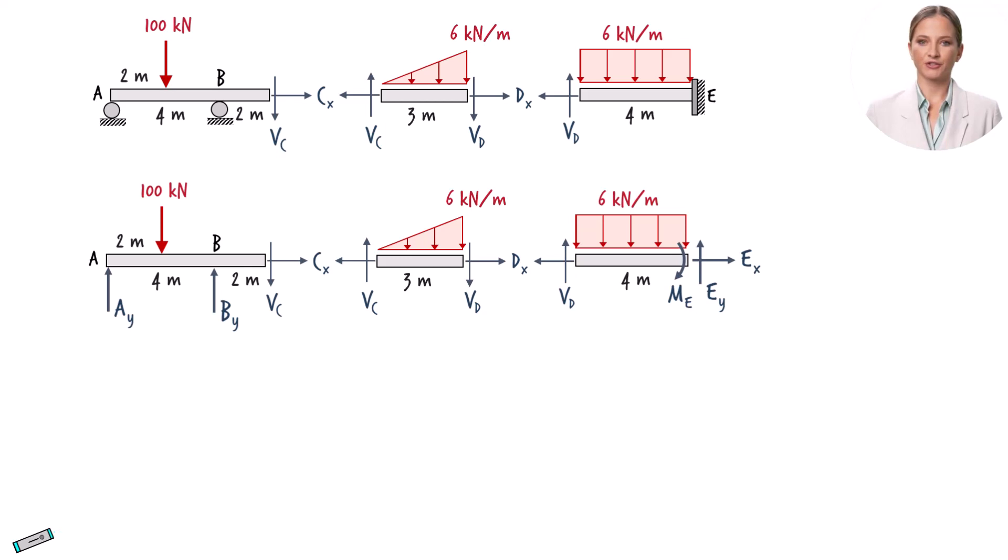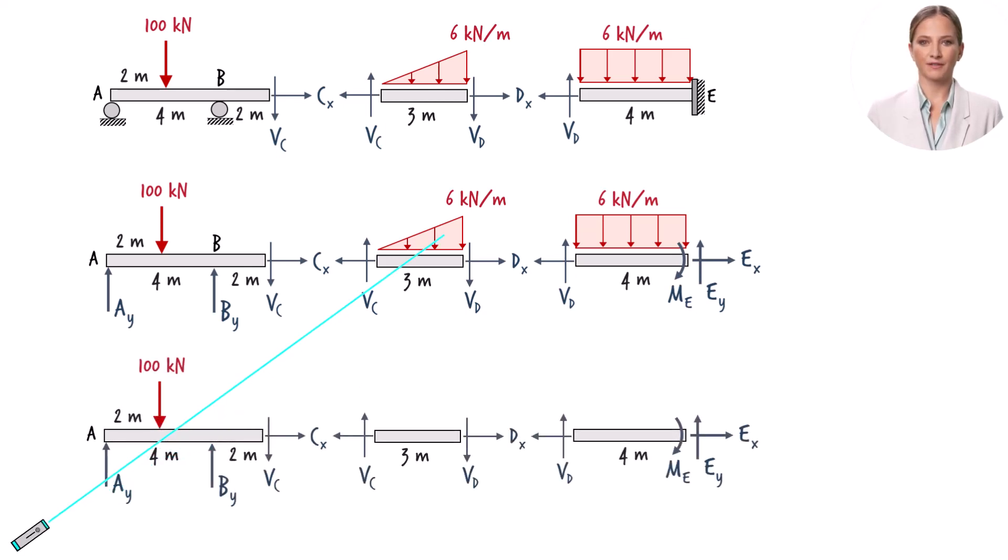We can replace each distributed load with its equivalent concentrated load to facilitate writing the equilibrium equations. Since the area of this triangle is 9, we replace it with a point load of 9 kN. The load is placed on the beam at the geometric center of the triangle.